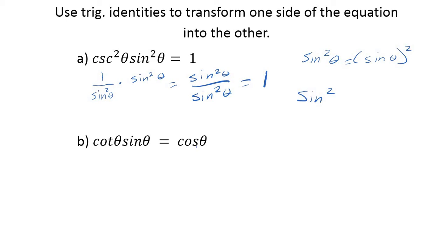Cotangent times sine equals cosine. Well, this side's much simpler, so we want to transform this side. Sine, about as simple as you can get. Cotangent, let's think about what we could do. How could I write cotangent? Well, think about those quotient identities. Cotangent is the equivalent of cosine over sine.